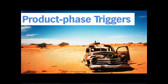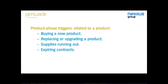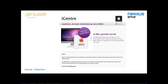The second category are product phase triggers — related not to what happens with the customer, but to the product they bought. It could be the moment of buying, the time to replace or upgrade, supplies running out, or a service contract expiring. A simple example is iCenter: they sell iMacs, and when your warranty period is running out, you can repurchase extended warranty. Many people will do this because they don't want to risk the machine breaking down.